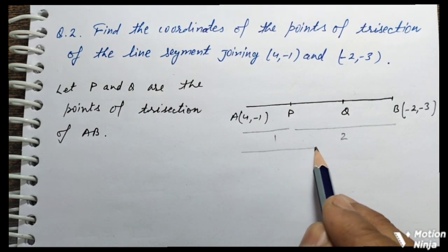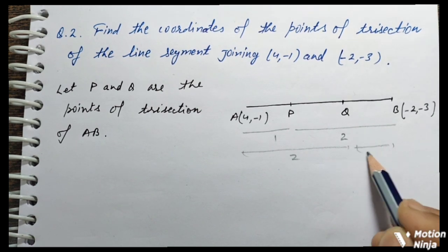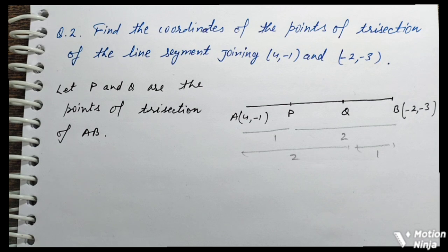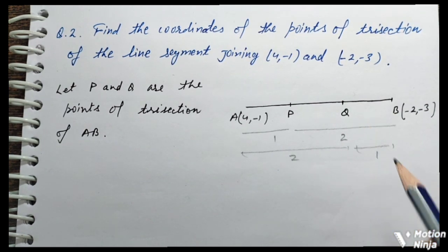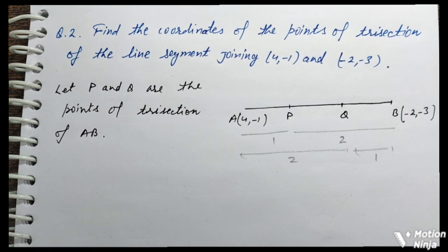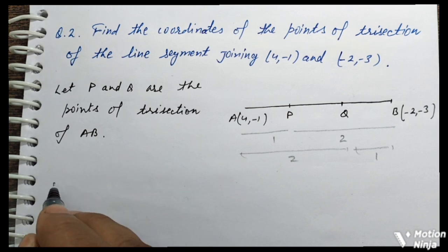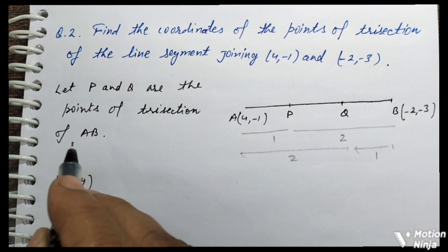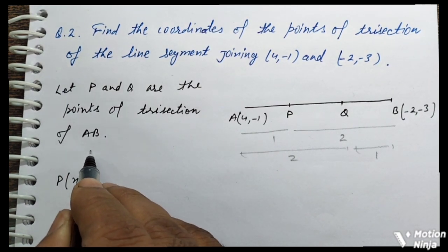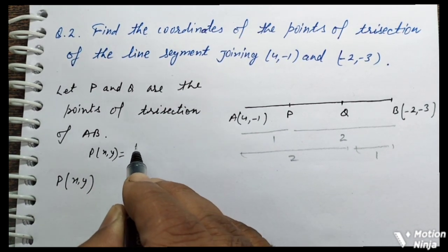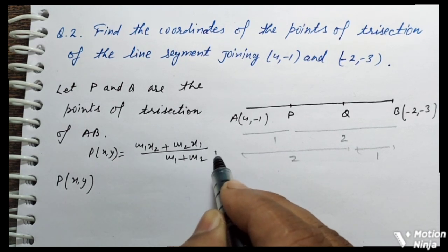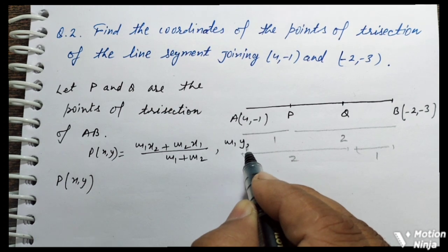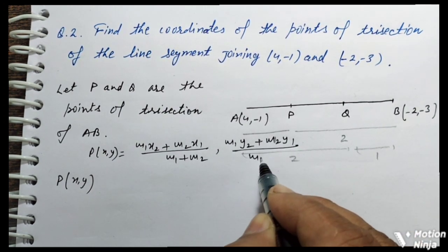और जब Q को find out करेंगे, तो ratio 2 is to 1 हो जाएगा। So AB को एक बार 1:2 में divide करना है और एक बार 2:1 में। Section formula है: x = (M1·x2 + M2·x1) / (M1 + M2), और y = (M1·y2 + M2·y1) / (M1 + M2).